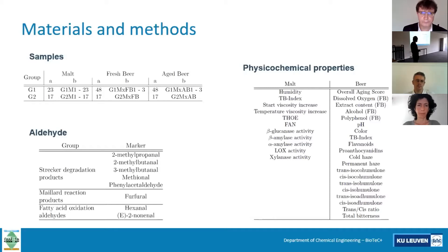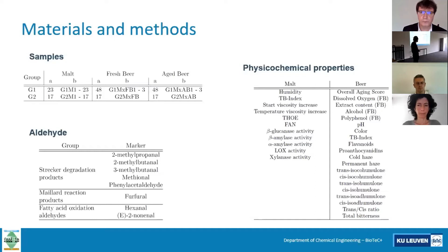Apart from that, we have some very clear properties of beer — again the TBI index, the same as for the malt. And then we have some flavonoids and proanthocyanidins. These are known antioxidants that come from the hops. Those are also relevant properties that I will be discussing. And then we have this group of trans and cis alpha acids that also come from hops, which are related with the bitterness of the beer, so also very important.